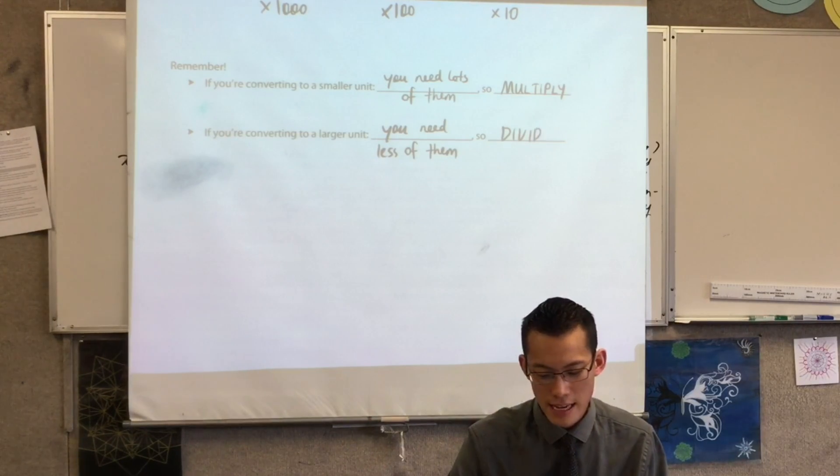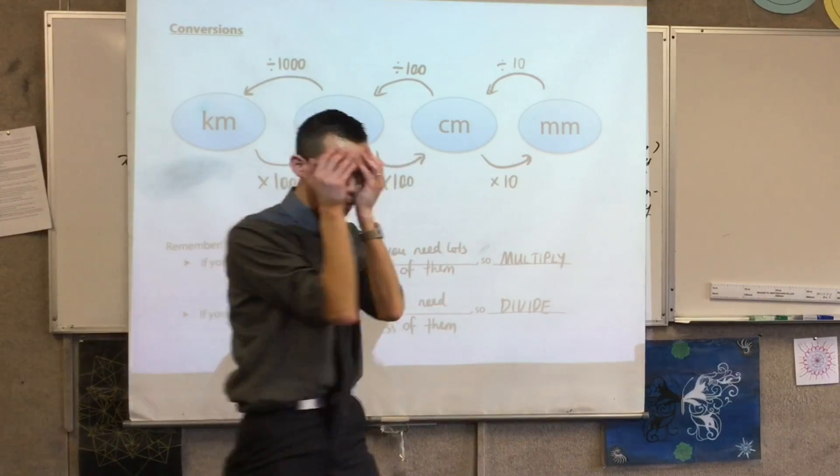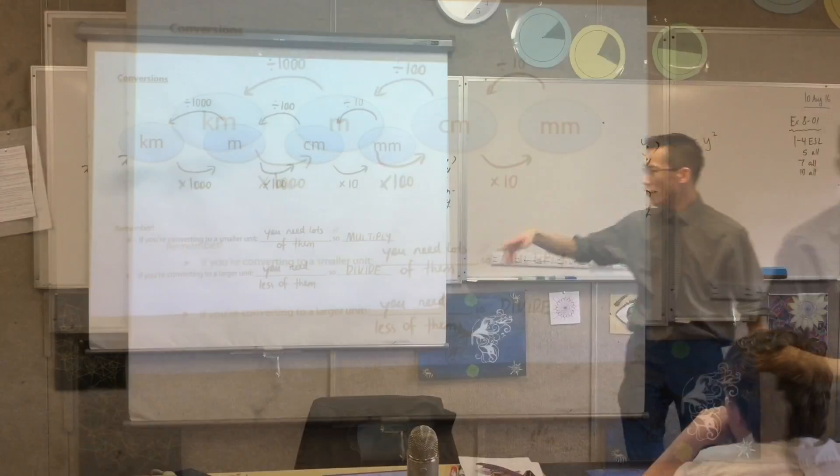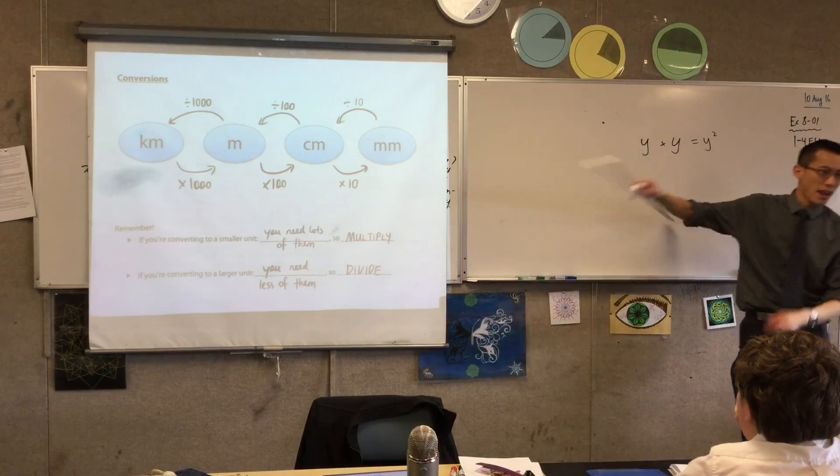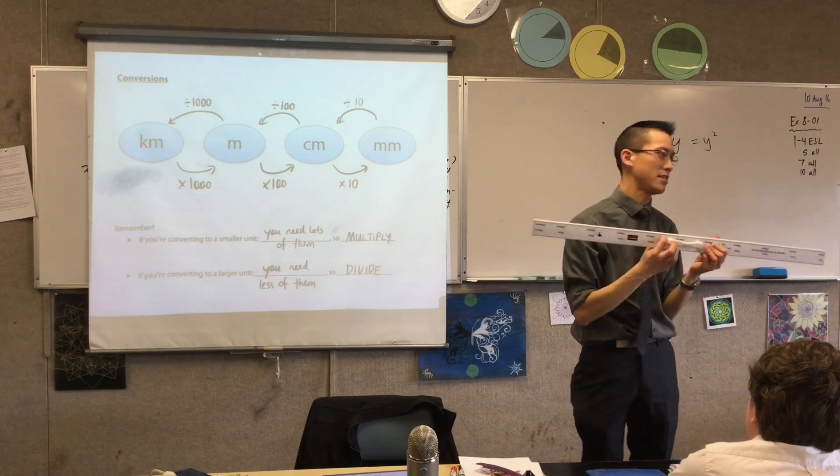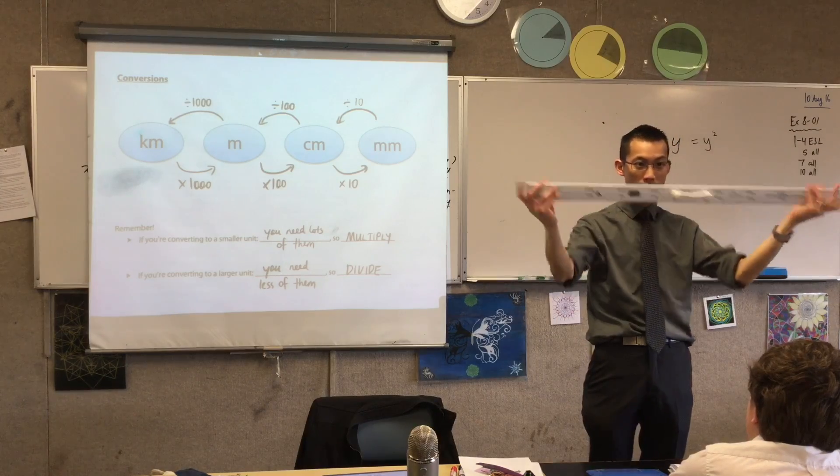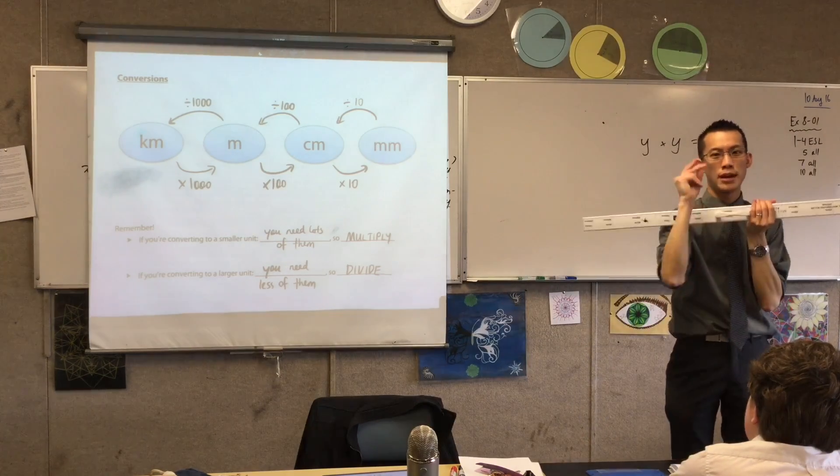So you can see the easiest thing to get wrong about this diagram is wait, do you multiply or do you divide? Which one am I doing? Remember this. This is what I like to remember. You look at a meter and you say, wow, that's got a lot of centimeters in it. And it's got even more millimeters in it. So if I'm converting from a big unit to a really teeny one, I need lots of them, so I multiply. Darcy.